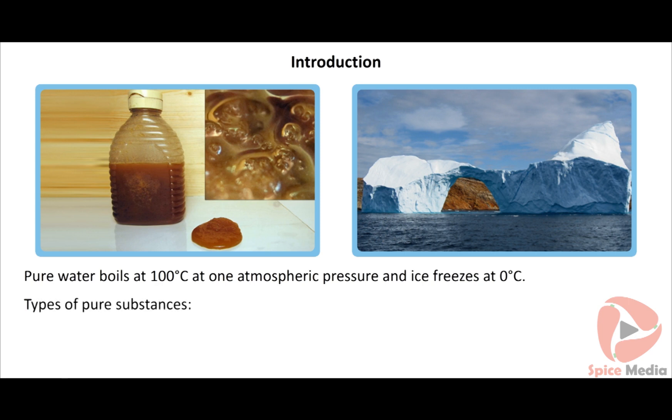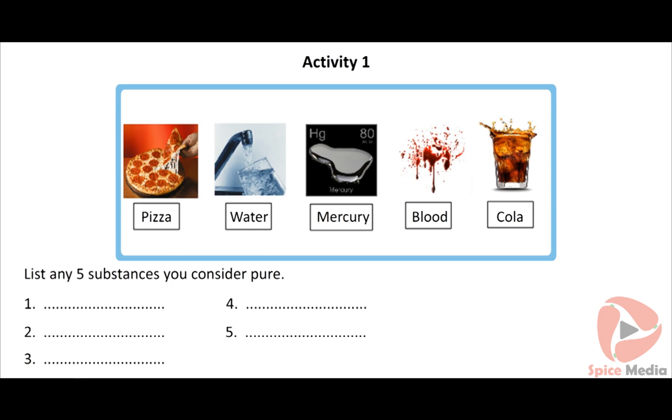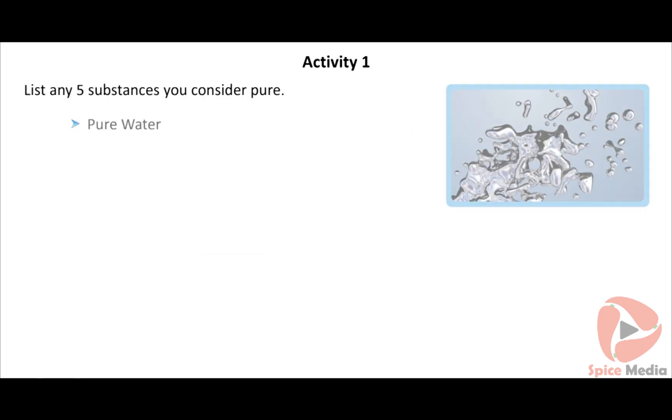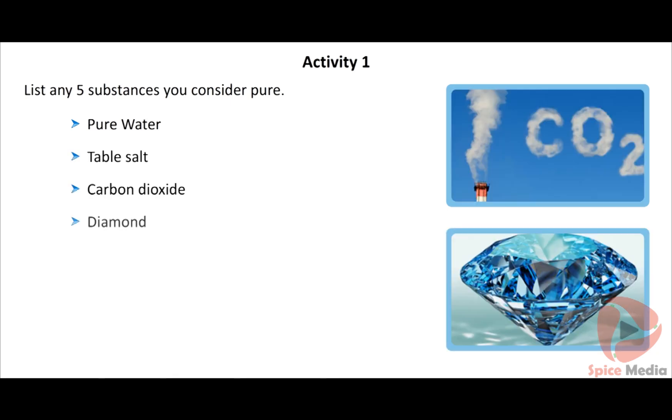Pure water contains only 2 hydrogen and an oxygen which cannot be separated by physical methods. Types of pure substances: A pure substance is either an element, e.g. iron, or a compound, e.g. sodium chloride. List any 5 substances you consider pure: Pure water, table salt, carbon dioxide, diamond, sugar.